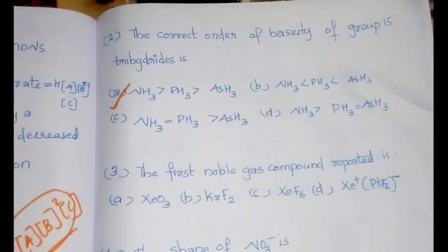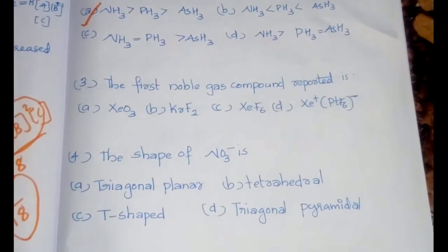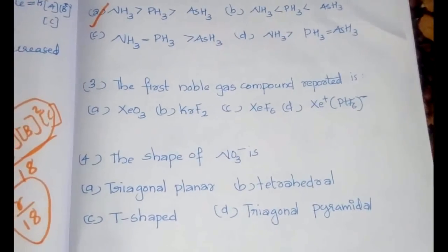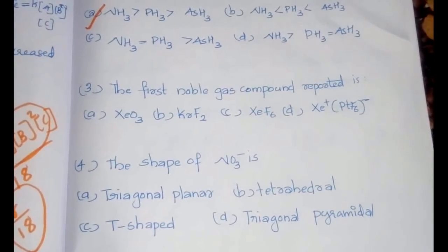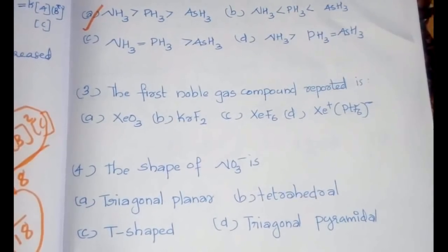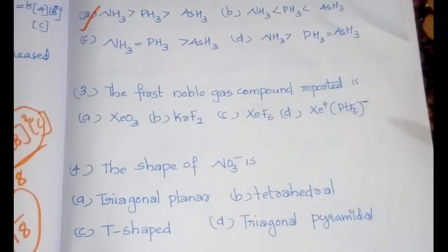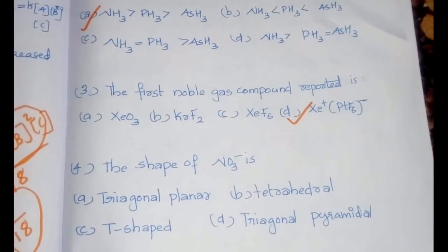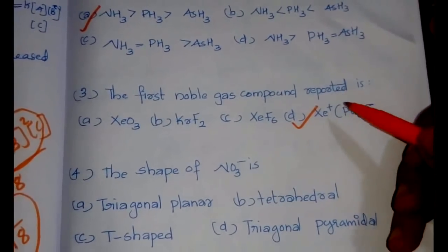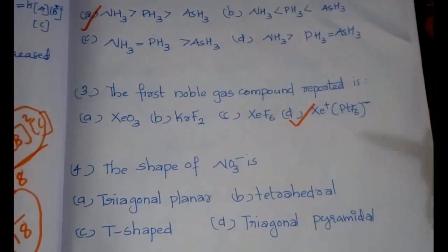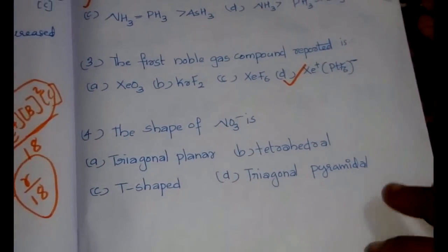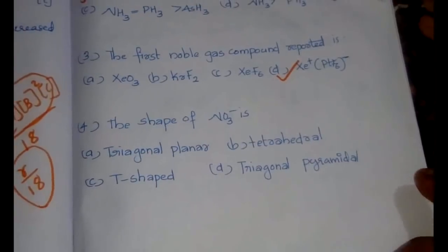The next question is from chemistry: the first noble gas compound reported is. Even if you don't know much about noble gas, the first noble gas compound reported was Xe⁺[PtF₆]⁻. This was first reported and later more compounds were discovered and synthesized.